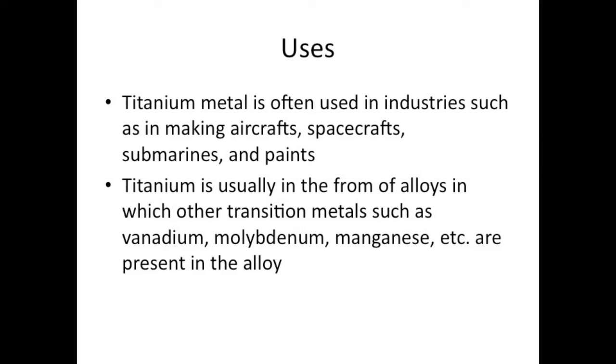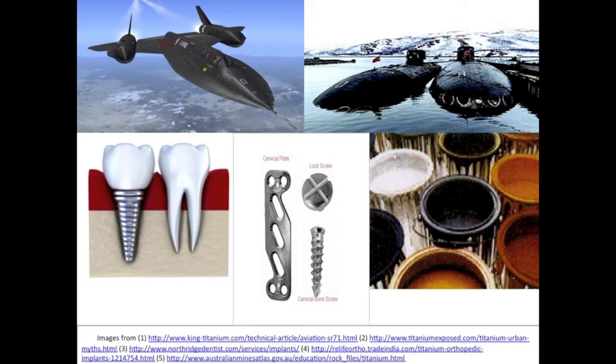Titanium metal is often used in industries such as in making aircrafts, spacecrafts, submarines and paints. Titanium is usually in the form of alloys in which other transition metals such as vanadium, molybdenum, manganese, etc. are present in the alloys. As previously stated, titanium is resistant to corrosion at room temperature and has a low density. Thus, titanium alloys are light, strong, and very durable.